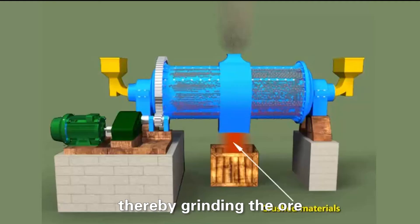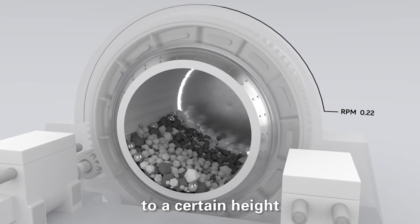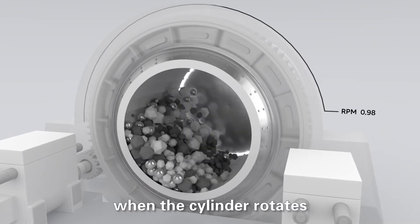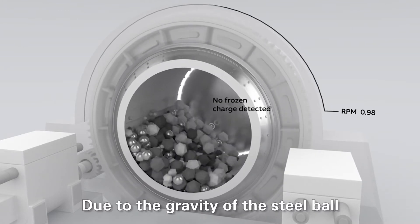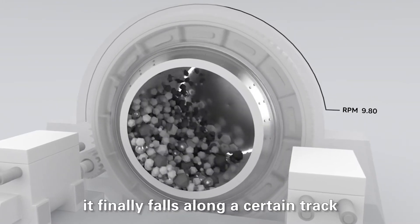The ball mill steel ball is lifted and raised to a certain height when the cylinder rotates. Due to the gravity of the steel ball, it finally falls along a certain track.